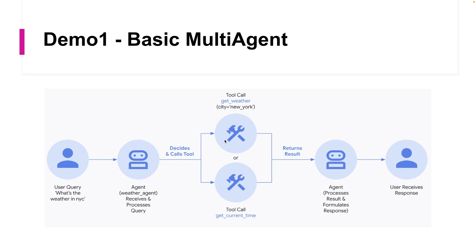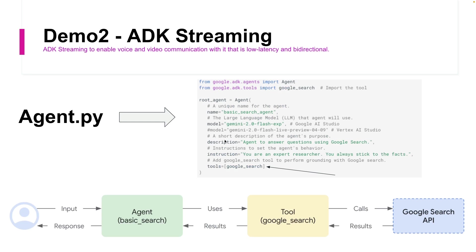Next, I'm going to demonstrate ADK Streaming, which is also a basic demo. I'm going to use the inbuilt tool called Google Search. Google Search is a predefined tool from Google that we can use and leverage using the LLM agent to find answers to users' queries.